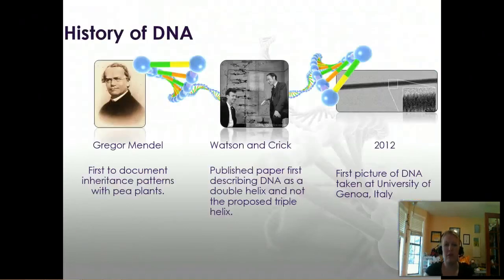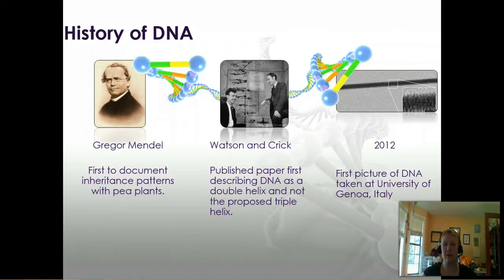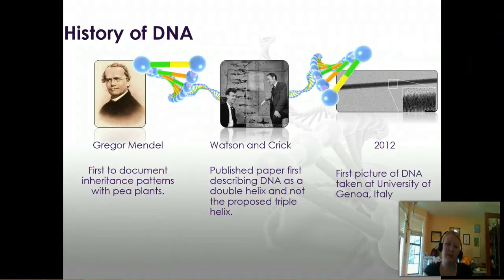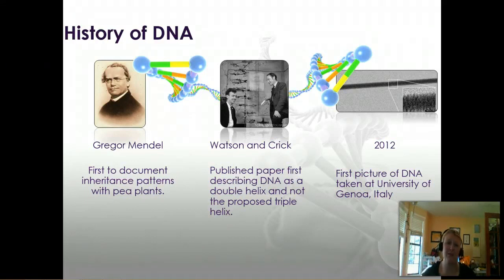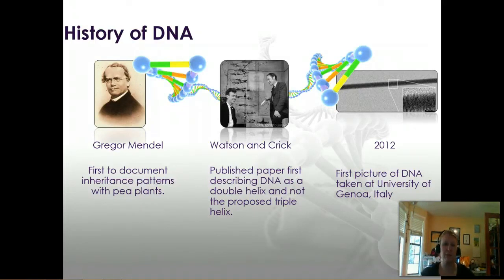So before we go too far, let's talk a little bit about the history of DNA. You have hopefully heard about these three men pictured here in your previous classes. The first to really document inheritance patterns is Gregor Mendel. We knew for a while that people look like their parents or their siblings looked similar, and Gregor Mendel was the first to really work out how inheritance patterns work, at least the most basic ones. But he didn't know that DNA was what passed it on — he just knew that there was something being passed from parent to offspring.